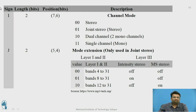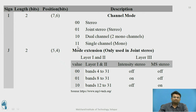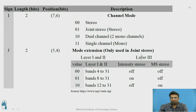Field I is 2 bits at positions 7 and 6, defining the channel mode: 00 = stereo, 01 = joint stereo, 10 = dual channel (2 mono channels), 11 = single channel (mono). Field J consists of 2 bits at positions 5 and 4, used for mode extension in joint stereo only.